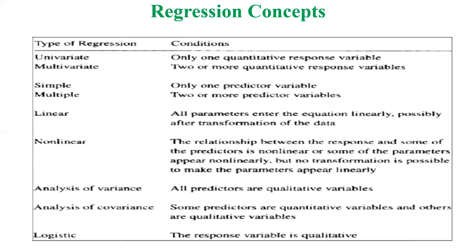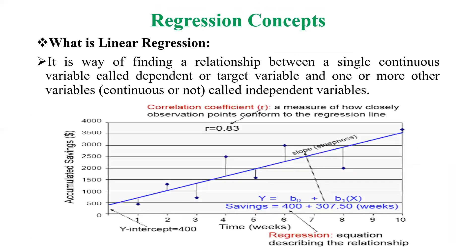Logistic regression is altogether a different story — the response variable is qualitative, i.e., categorical. In general regression, we expect quantitative measures, but in logistic regression the response variable is categorical, so we treat it as a classification model. Linear regression is a way of finding a relationship between a single continuous dependent or target variable and one or more independent variables.